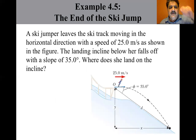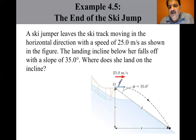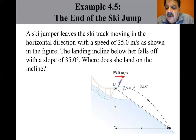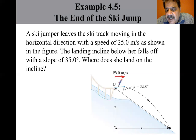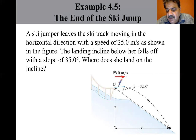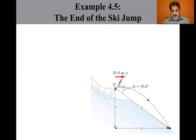A ski jumper leaves the ski track moving in the horizontal direction with a speed of 25 meters per second. The landing incline below her falls off with a slope of 35 degrees. Where does she land on the incline? We estimate the skier to be airborne for perhaps four seconds, traveling about 100 meters horizontally, so the distance D along the incline should be of the same order of magnitude. We use the particle under constant velocity model for horizontal motion and particle under constant acceleration for vertical motion.